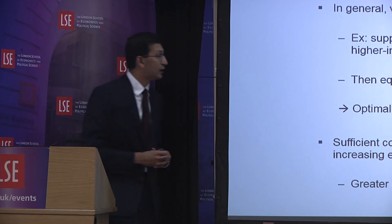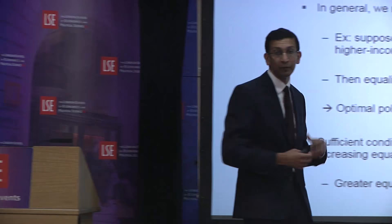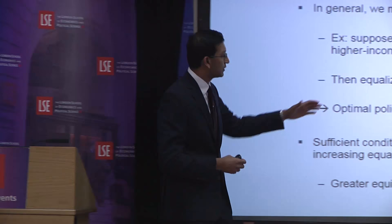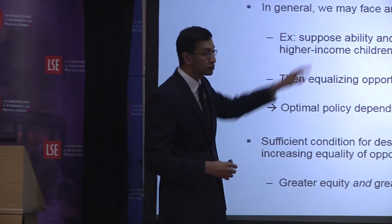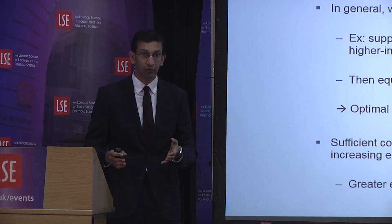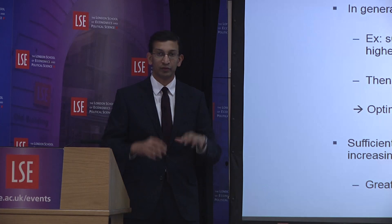There are many reasons to think we might face an equity-efficiency trade-off even in improving equality of opportunity. Suppose ability and resources are complements, and suppose that higher-income children have higher ability on average because of genetic transmission across generations. In that case, equalizing opportunity by spreading school quality equally across families would reduce total output, because giving higher-quality schools to higher-ability kids has a bigger payoff in terms of total output.